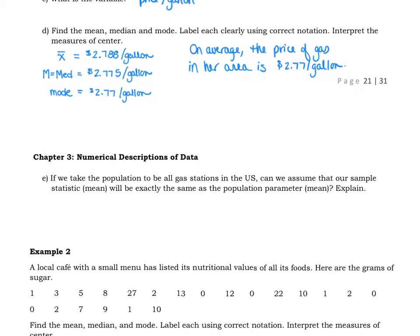And one little last discussion question. So if we take the population to be all gas stations in the U.S., can we assume our sample statistic, our mean—so sample statistic is a statistic, a numerical summary based on the sample—so we're going to use the mean in this case. Will it be exactly the same as the population parameter? So remember, a statistic is the same thing to a sample as a parameter is to a population. So if we're talking about the mean of the population compared to the mean of the sample, would we assume that the sample mean will be exactly the same as the population mean?